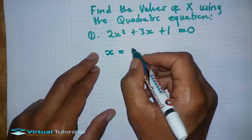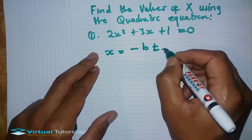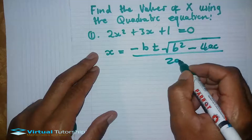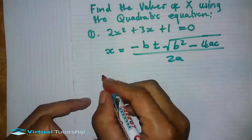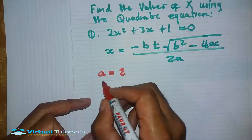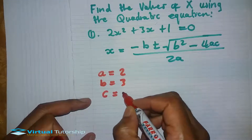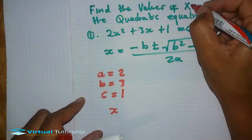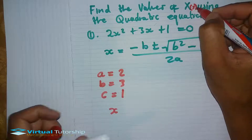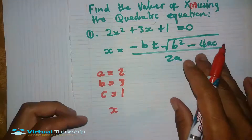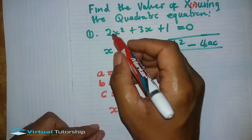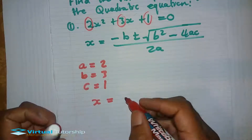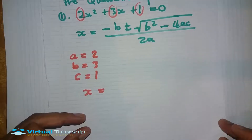The value of x is found using the quadratic formula. For quadratic equations, there are sometimes two x values, not only one. So x is equal to the quadratic formula. I substitute the values: a is 2, b is 3, and c is 1. That gives us minus b, which is 3, plus or minus the square root of b squared minus 4ac, all over 2a.